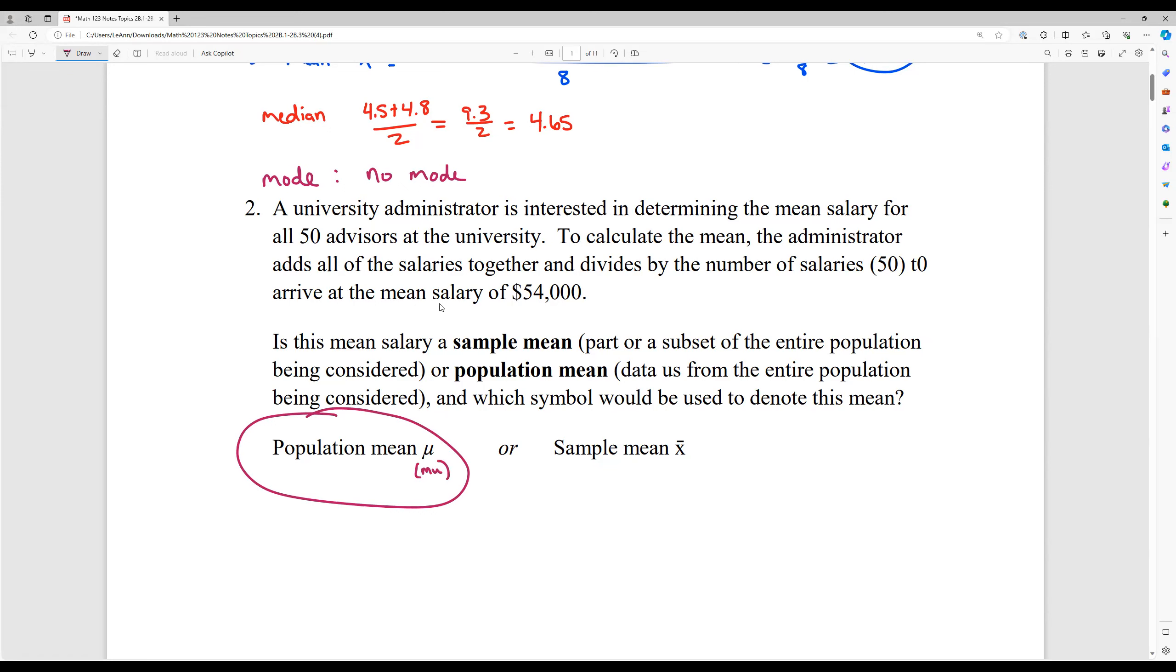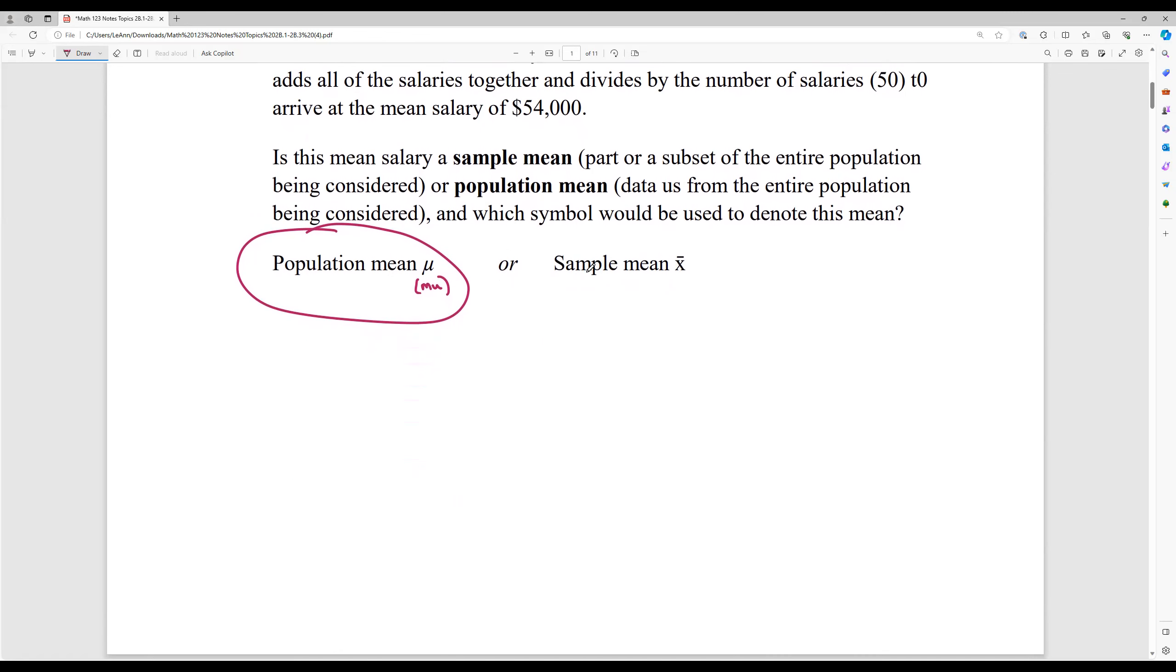So since all 50 advisors were included in the calculation of that mean, this is a population mean. And we do have a special symbol for that. Instead of the X bar, it is a little Greek symbol. This is the word mu in the Greek alphabet. Kind of looks like an M and a U kind of squished together a little bit. But if they had said, you know, to calculate the mean, the administrator picks 10 randomly advisors and takes their salaries and adds them together and then divides by 10, that would not have been using all 50 advisors. The whole, all 50 advisors are being used in the calculation. So that's what makes it a population mean.